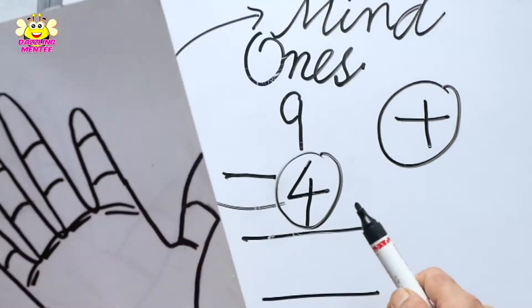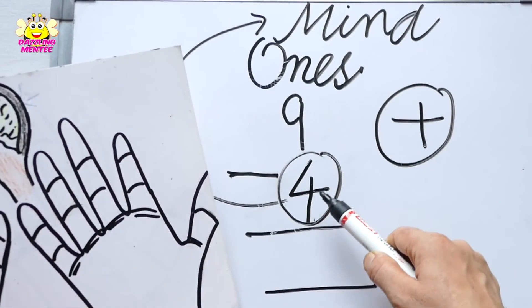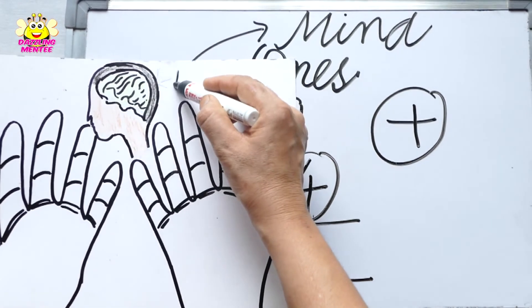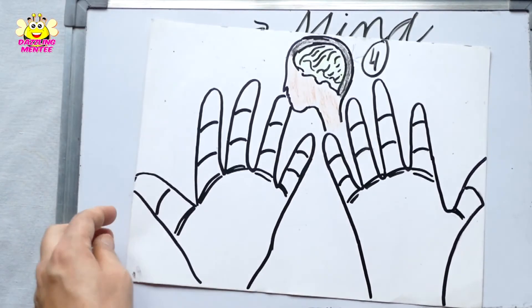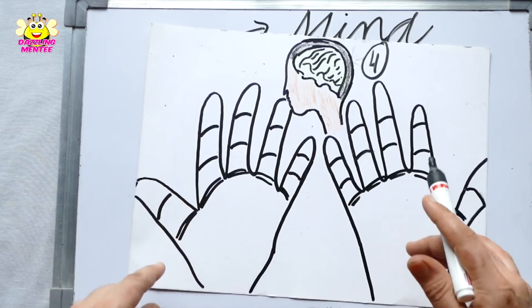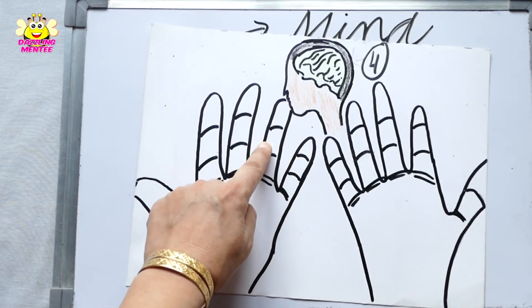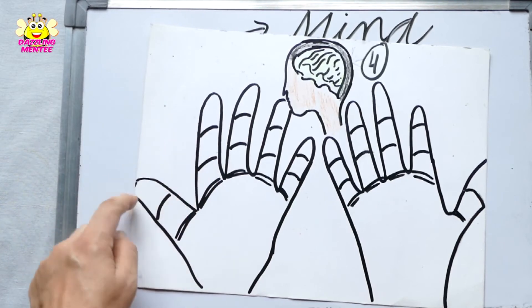These are fingers. Now 4 is in our mind. What will we do? We count after 4: 5, 6, 7, 8, 9.